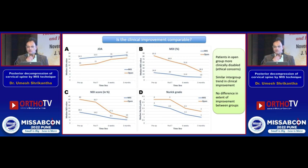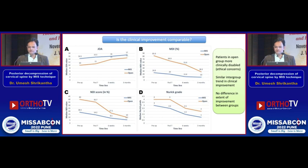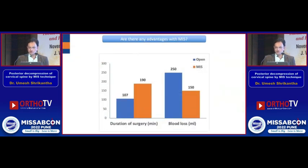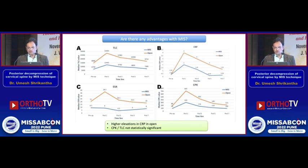Regarding clinical improvement: there is a bias here, as we were not initially selecting very severe myelopathy cases — most MIS group patients were NURIC grade three rather than grade four or five. There is an obvious difference in pre-operative disability index levels between the MIS and open groups, but there is a proportional improvement in all indices between pre- and post-operative levels with no significant difference in outcomes. Surgery duration was longer in MIS, but blood loss was significantly less. Post-operative elevations in TLC, CRP, CPK, and ESR were significantly higher in the open group.